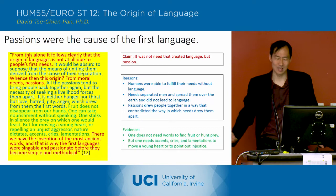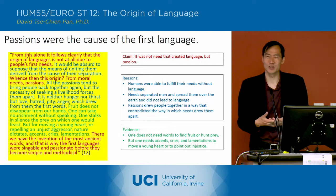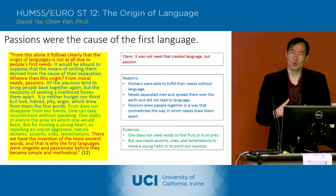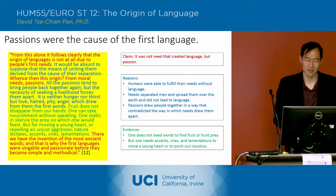Passion brings people together in a way that contradicts the way in which needs separate them. And he's depending upon the reasoning that humans are able to fulfill their needs without language, and that it's only when they want to express their emotions that they need language — and that language is essential for bringing people together in society.